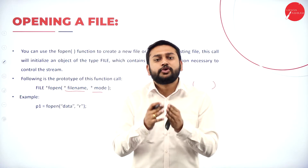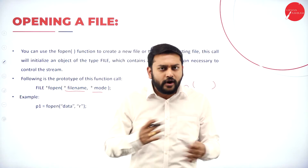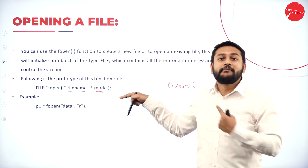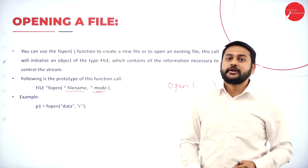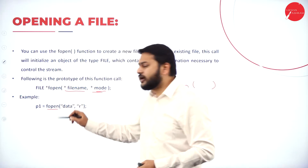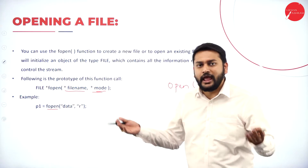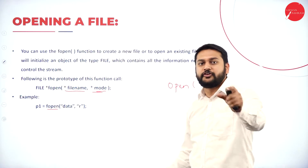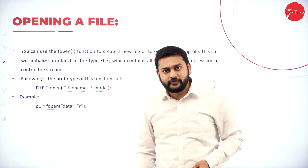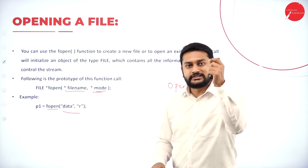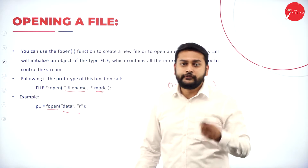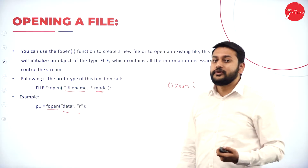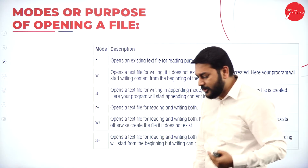The fopen function takes two parameters: the first is the file name, and the second is the mode — in which mode you are trying to open the file. Before performing any operation on a file, you open it and specify for what purpose: read, write, or modify. You have to specify the mode.